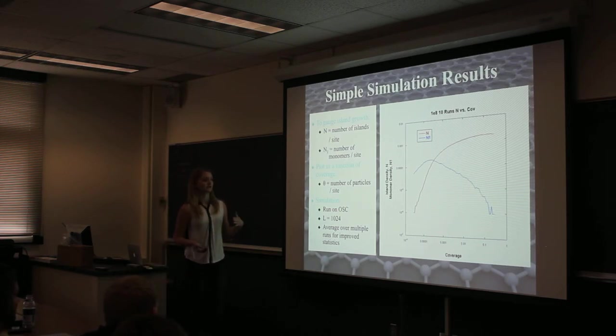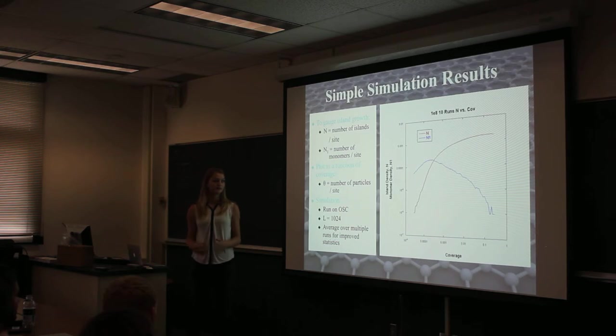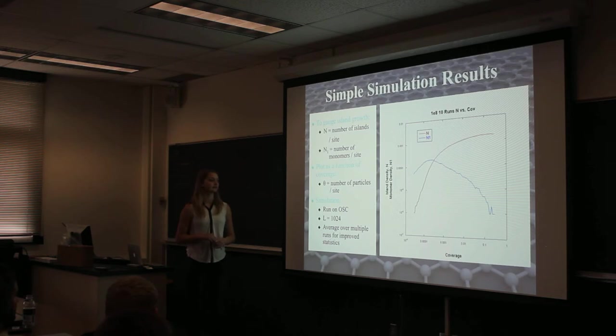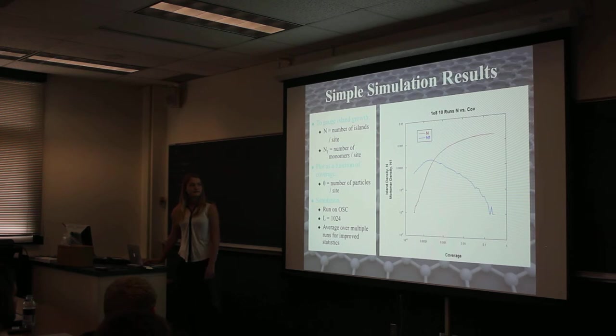The monomers, on the other hand, start off increasing also with about a power relation, and then drop off pretty quickly because once you get bigger islands, as soon as a new particle is deposited it's going to diffuse really quickly and join the existing island. This was run on the computer with a larger lattice size of 1024, and again we average over 10 runs, and I'm going to be doing probably like 200 runs that we'll average for better statistics.